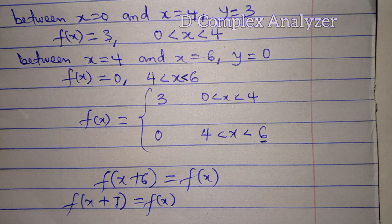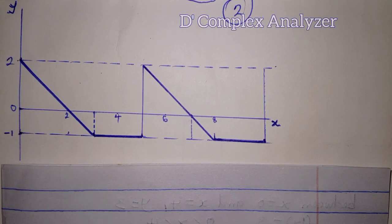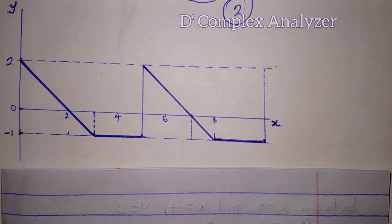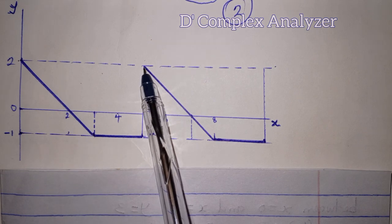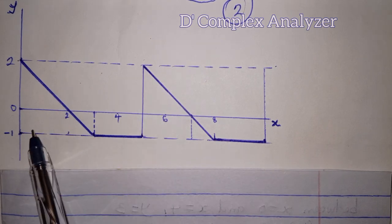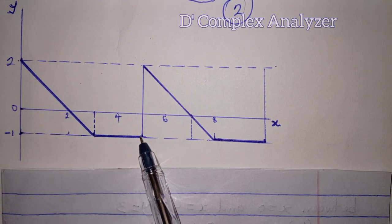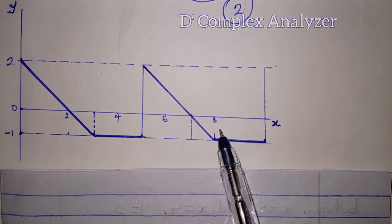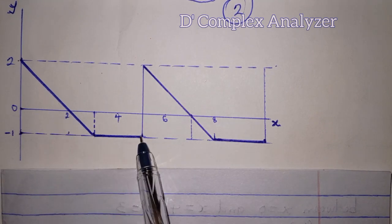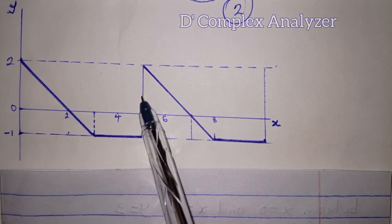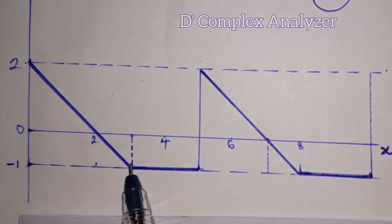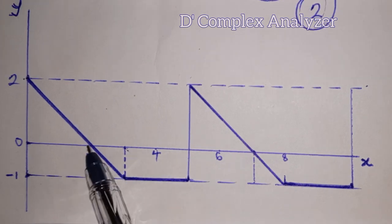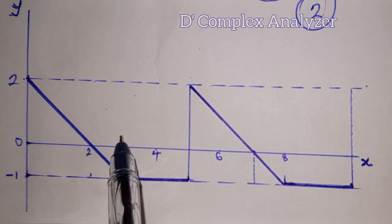Let's describe the next function. This is the second function to describe analytically. The function started from here and at this point it started again. So if we can describe the function from here to here, it means we have gotten the analytic description of the entire function. These thick lines are what we watch out for, not the thin ones. This first thick line is from here to here — this is 3, and we have 2, 3, 4.